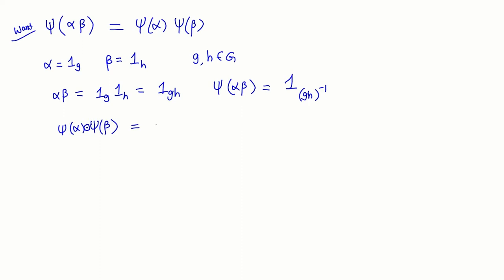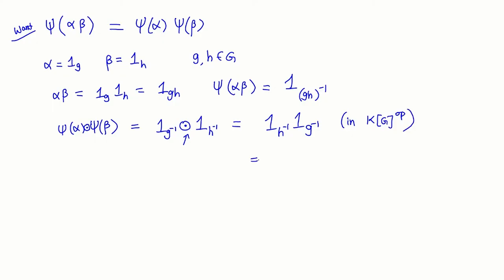Taking ψ(α) · ψ(β) in KG^op: ψ(α) = 1_{G^{-1}} and ψ(β) = 1_{H^{-1}}. Since this multiplication is in the opposite ring, it is the usual multiplication but in the opposite order. So these two things are equal because 1_{(GH)^{-1}} = 1_{H^{-1}G^{-1}}, and 1_{H^{-1}} · 1_{G^{-1}} also equals 1_{H^{-1}G^{-1}} — here I interchange the order of factors and do the usual multiplication in R. So these two are of course equal, and we are done.